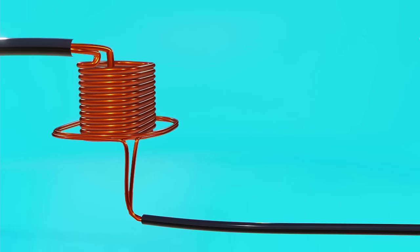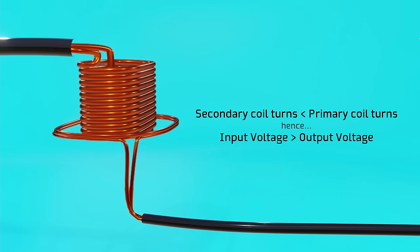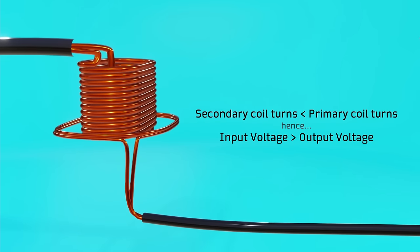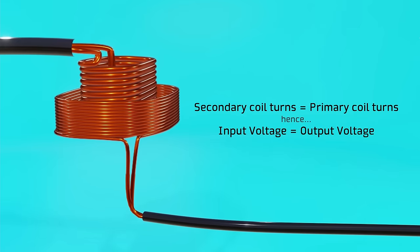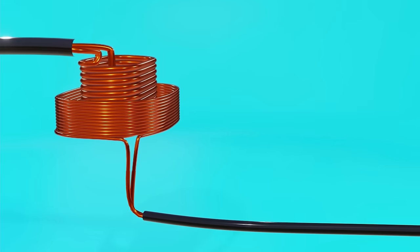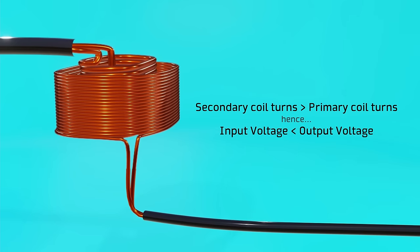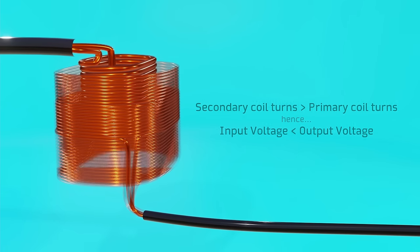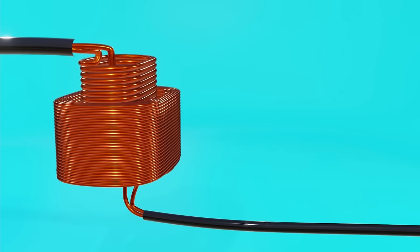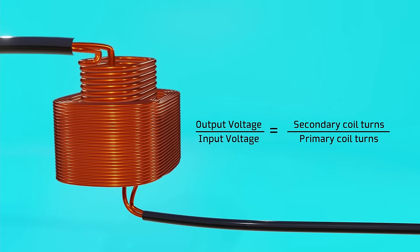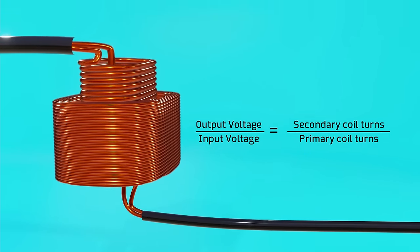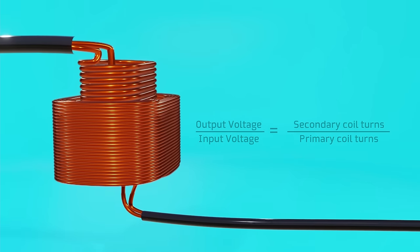In this way, if we have fewer turns in the secondary coil than in the primary coil, the output voltage will be lower. If the number of turns is the same, the voltage will be the same. And if the number of turns is greater the voltage will be higher. It's a pretty simple ratio. In fact we can apply it in reverse, because if we know the input voltage and the output voltage we could estimate the relationship between the number of turns.